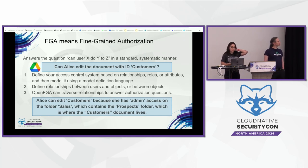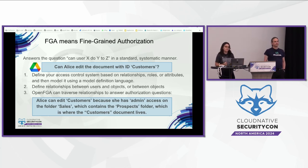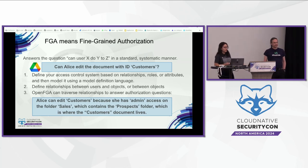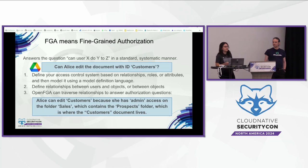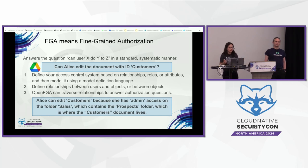How FGA works at a very high level: first you define a model of your permission system — what are the actors and what things you can do with them. Then you write the relationships between those objects or users. FGA builds a graph of that information and tries to see if there is a way of going from the user to the object. If there is, it returns permission allowed.